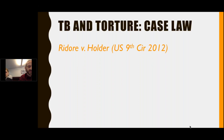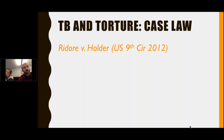Now looking at cases from the United States Federal Appellate Courts — specifically the Ninth, Second, and Eighth Circuit Courts. These are the level just below the Supreme Court. Cases heard here set precedent for the states within each circuit's jurisdiction, and if appealed further, they would go to the Supreme Court.